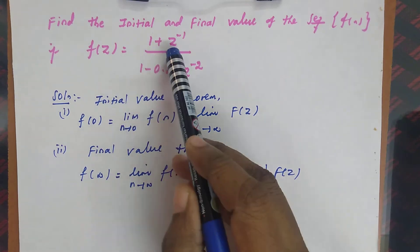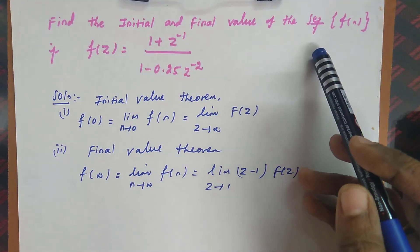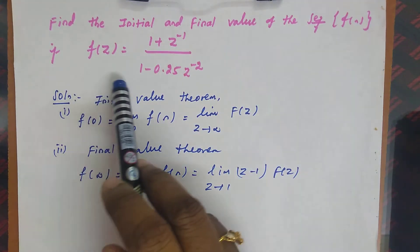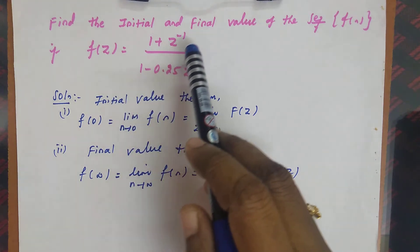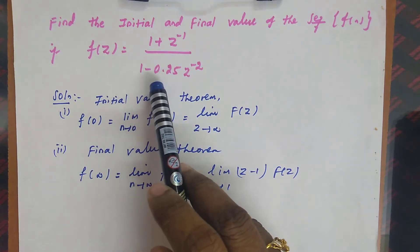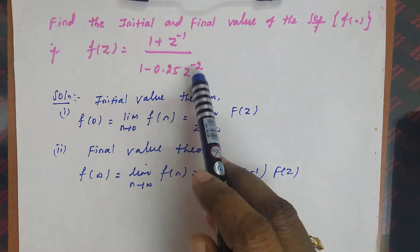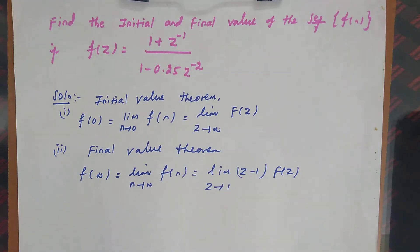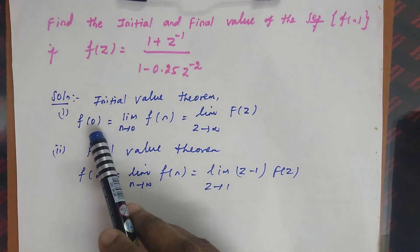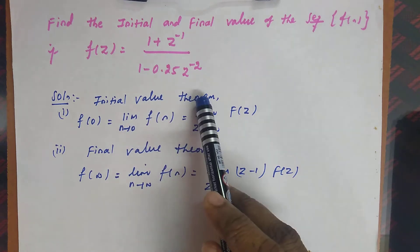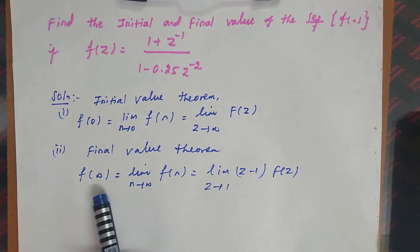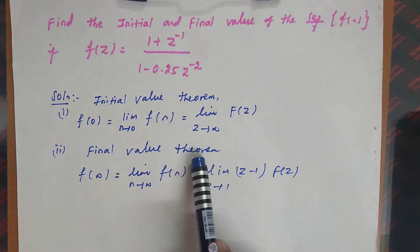Look at the first question: Find the initial and final value of the sequence f(n), if F(z) equals (1 + z⁻¹) divided by (1 - 0.25z⁻²). For this given sequence, we need to find the initial value and final value. Recall that f(0) denotes the initial value and f(∞) denotes the final value of the sequence.